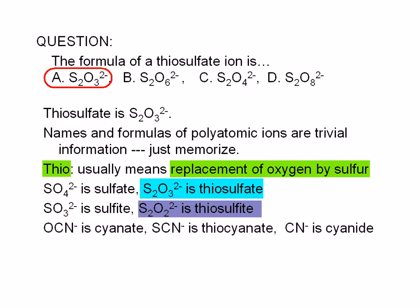OCN with a negative 1 charge is cyanate. Replacing the oxygen by sulfur, we get SCN with a negative 1 charge. This ion is called thiocyanate. You can see that 'cyan' is associated with carbon and nitrogen — in fact, cyanide is CN with a negative 1 charge. The other choices given here are all commonly occurring ions containing sulfur.